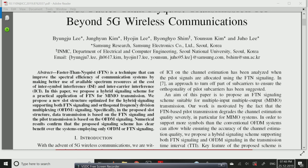In this paper we propose a hybrid signaling scheme for practical application of FTN and MIMO transmission. Here we are using MIMO technology with both transmission and reception process. MIMO means multi-input multi-output technology. The multi-input multi-output technology used in 5G network can handle more number of users' data transmission at a time.